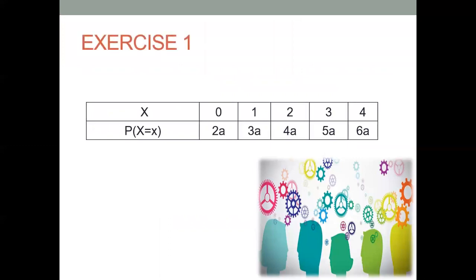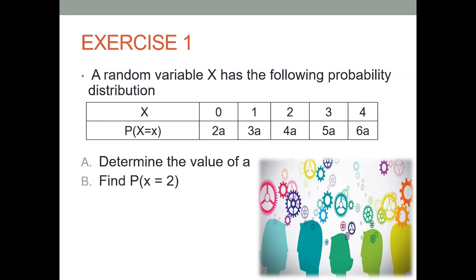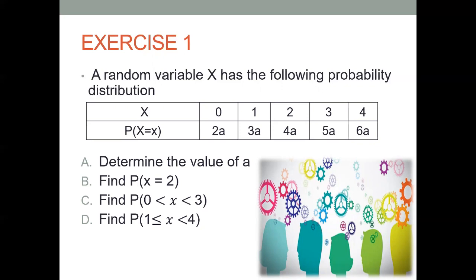Let's have an exercise to observe and apply what we have defined. A random variable x has the following probability distribution: the values of x are 0, 1, 2, 3, and 4, and the probabilities of x are 2a, 3a, 4a, 5a, and 6a respectively. We need to determine the following: first, determine the value of a; next, find the probability of x equal to 2; third, find the probability of x greater than 0 but less than 3; fourth, find the probability of x greater than or equal to 1 but less than 4; lastly, find the probability of x greater than 3.